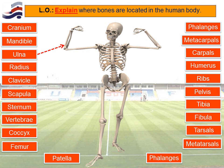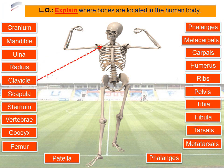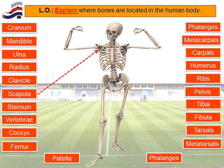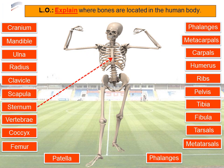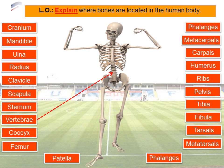Just to recap: ulna is underneath — it begins with a U, that's how we always remember that — and the radius is on top. Moving on to the clavicle, which you would often refer to as your collar bone, and that stretches across the top of your chest. The scapula is actually behind, and it's something you would often refer to as your shoulder blade. The sternum is the breast bone connecting the ribs at the centre of your chest. The vertebrae are individual bones that stand on top of each other to create the vertebral column, or spinal column.